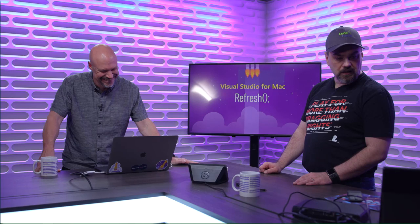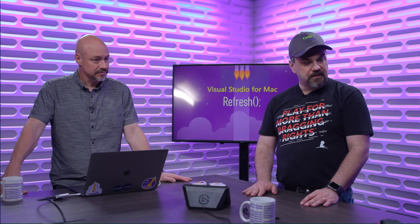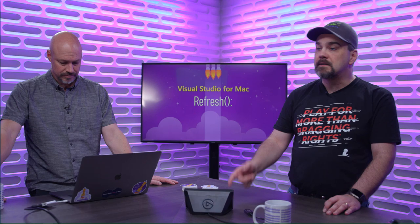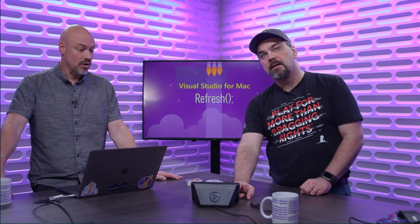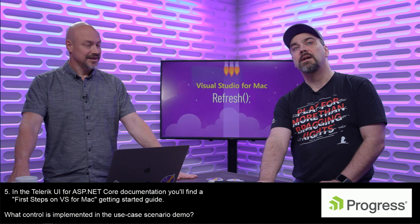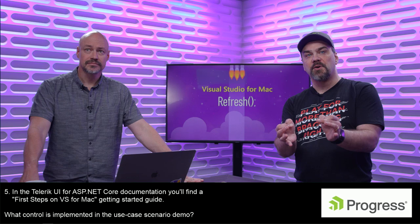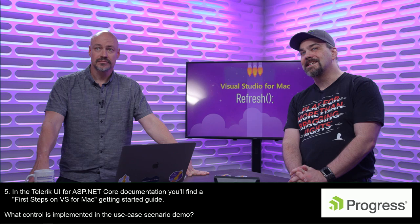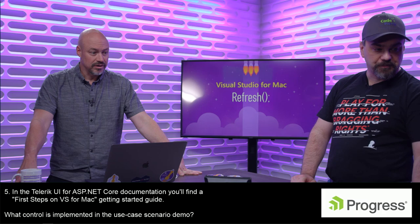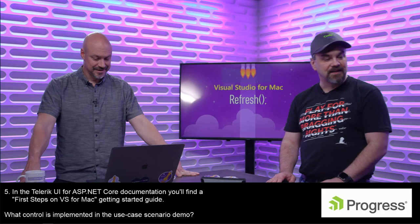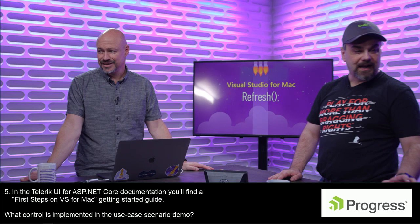Next trivia question from Progress Software. They make components and tools to help build your application. This is a question for a DevCraft Complete License — every one of the controls they make, doesn't matter what platform you're targeting, there are controls for you. Progress asks: in the Telerik UI for ASP.NET Core documentation, you'll find a first steps on Visual Studio for Mac getting started guide. Which control is implemented in the use case scenario demo in that documentation?